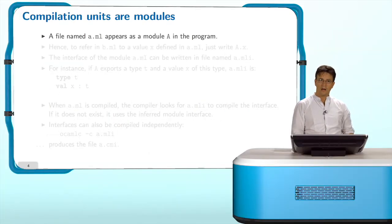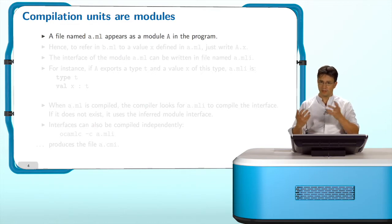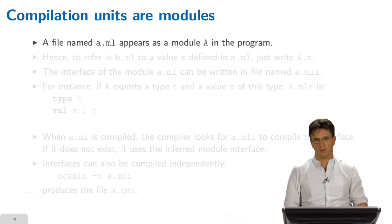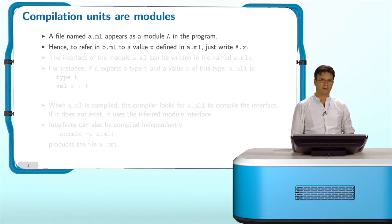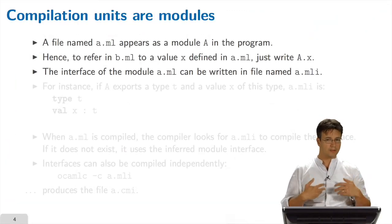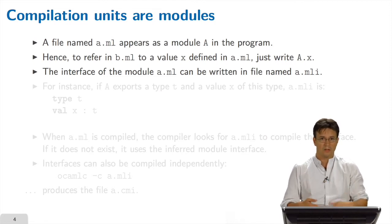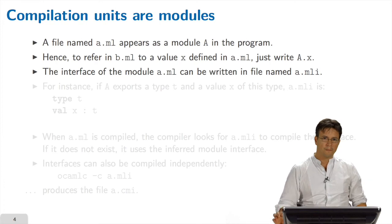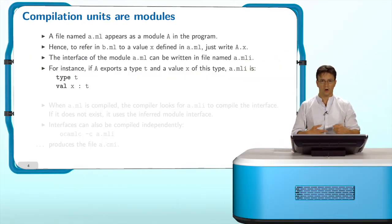In fact, compilation units are seen as modules from the programming point of view. If you have a file named a.ml, it will appear as a module A in the program. The only change is that the first letter is uppercase, so the filename is capitalized. If you want to refer in b.ml to a value x defined in a.ml, you just write A.x and it will work. As compilation units are modules, we should be able to represent the interface of the module. That's possible if you write a file named a.mli, you can define the signature of the module A.